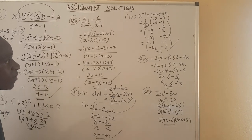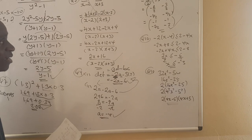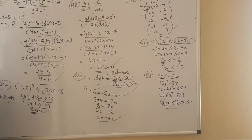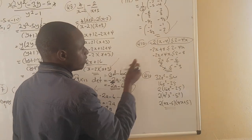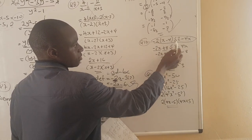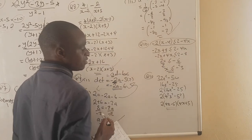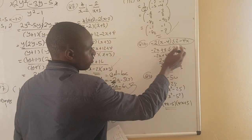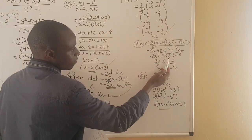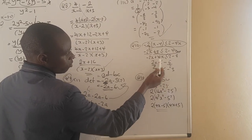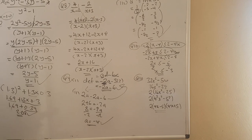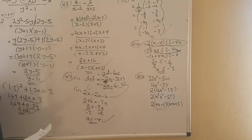Question 10 was an inequality, which also features commonly in examinations. We expand: negative 2 times x gives negative 2x, and negative 2 times negative 4 gives positive 8, with the right side being 2 minus 4x. Collecting like terms: negative 2x plus 4x gives positive 2x, and 2 minus 8 gives negative 6. So 2x is less than or equal to negative 6. Dividing by 2 gives x less than or equal to negative 3.